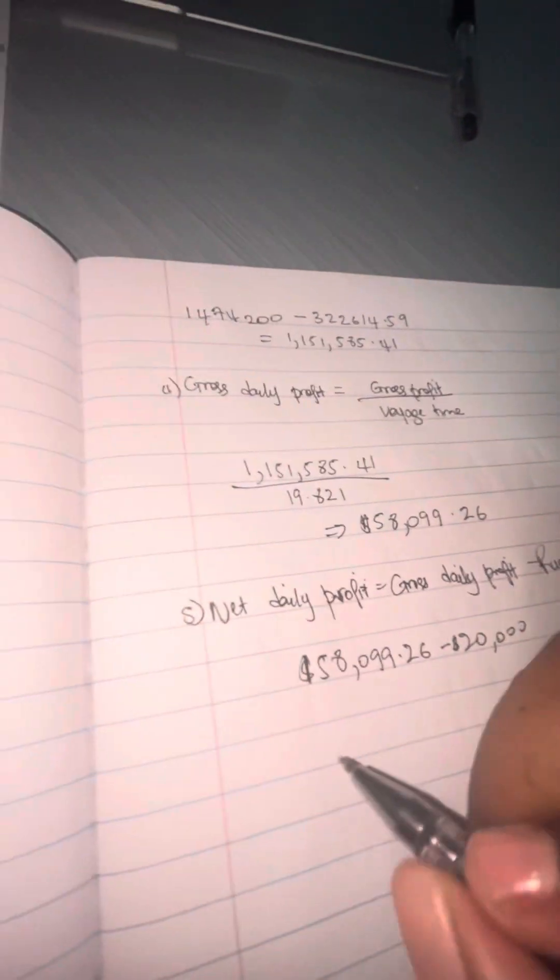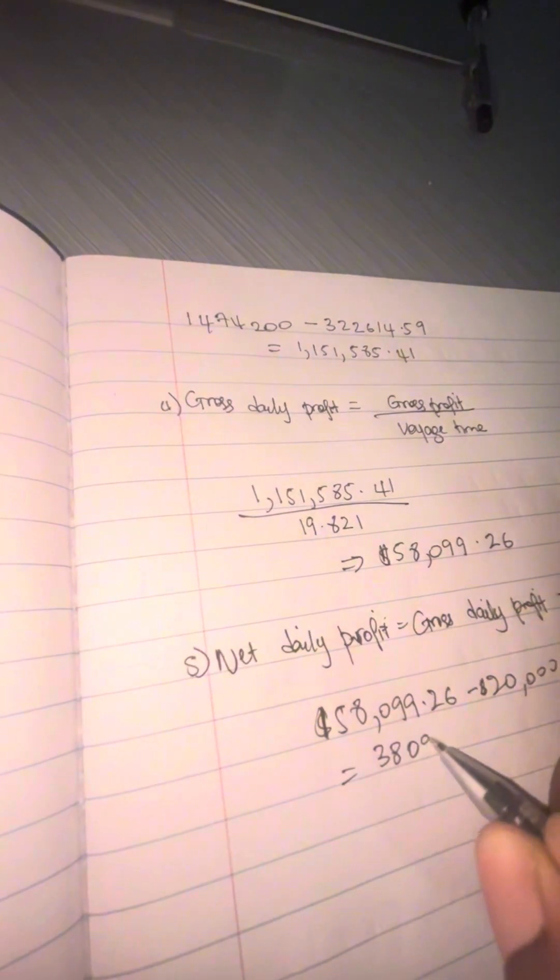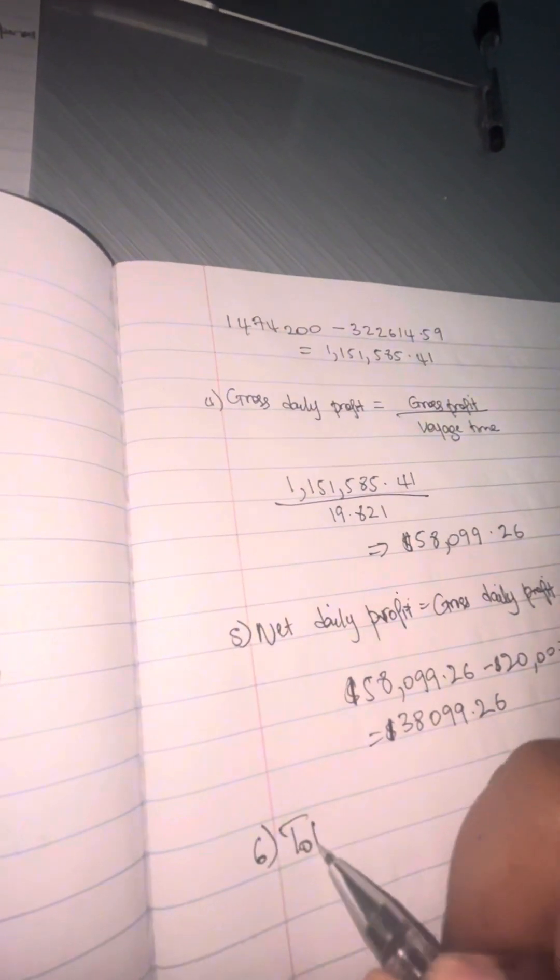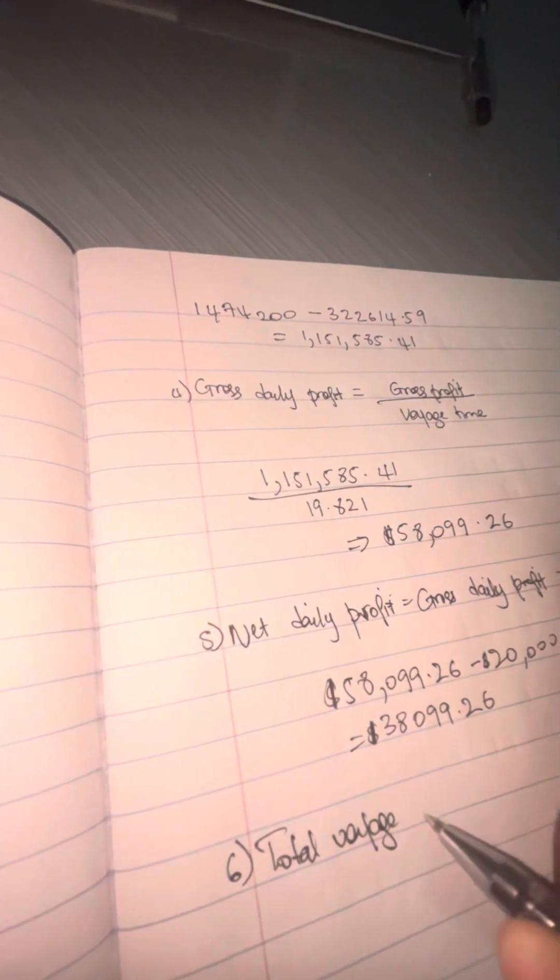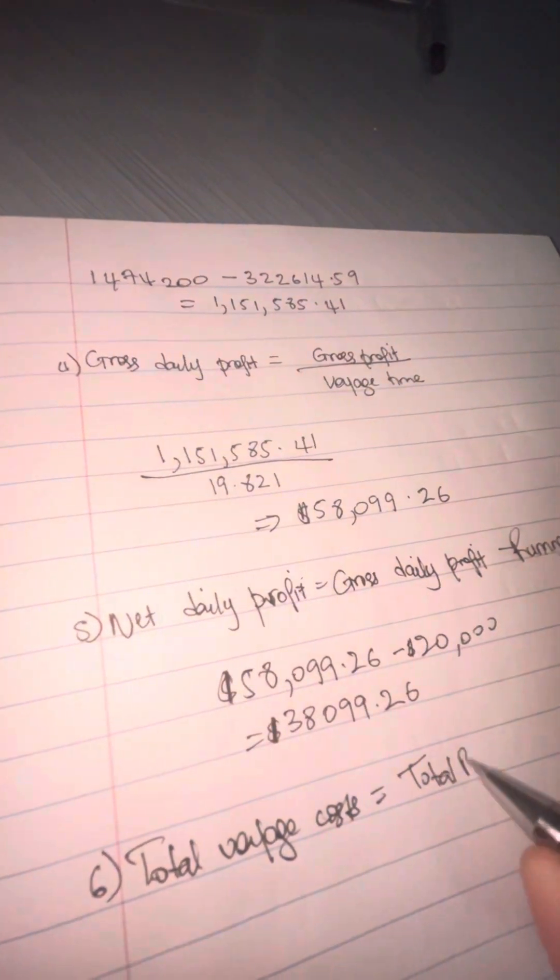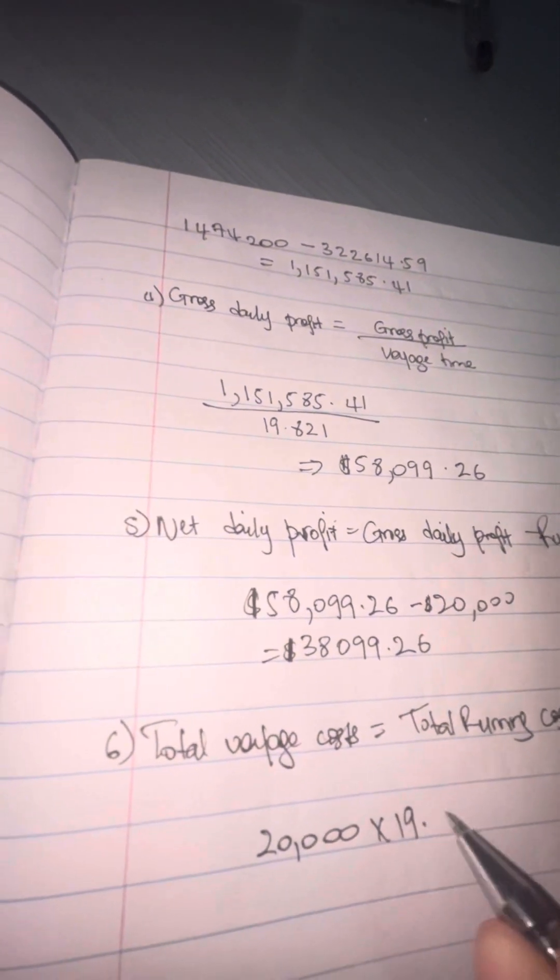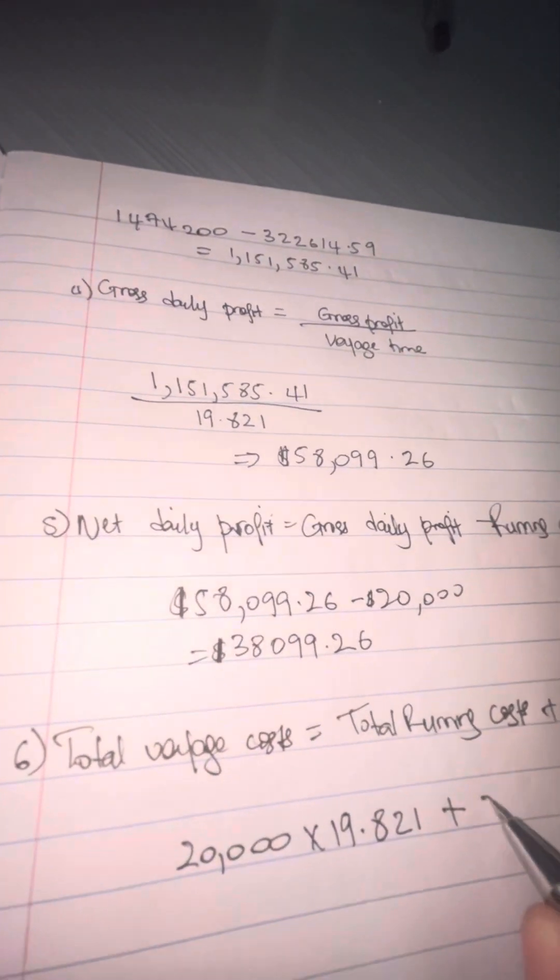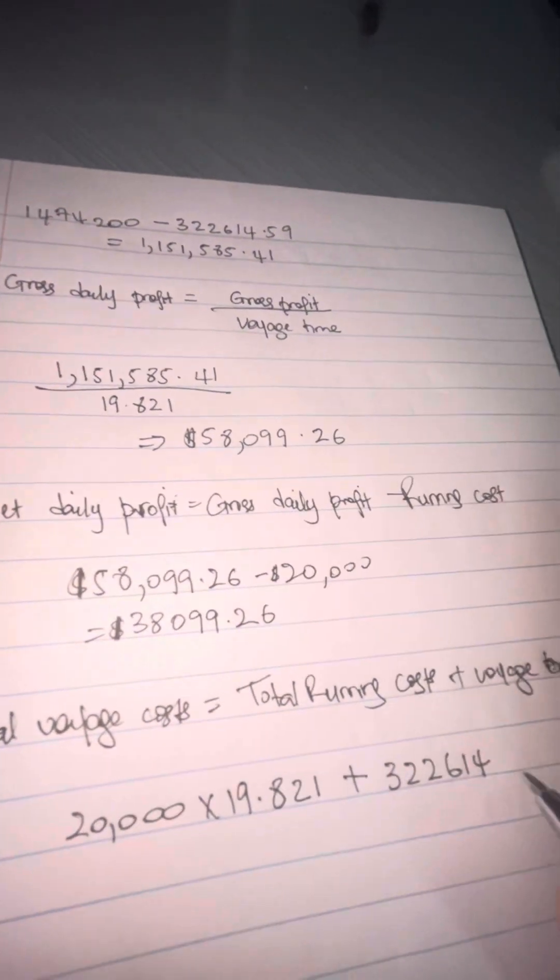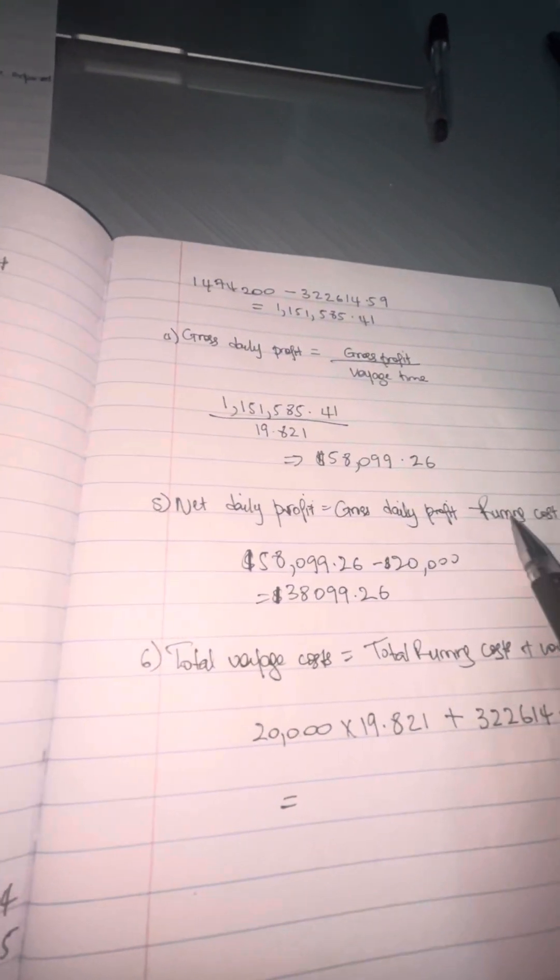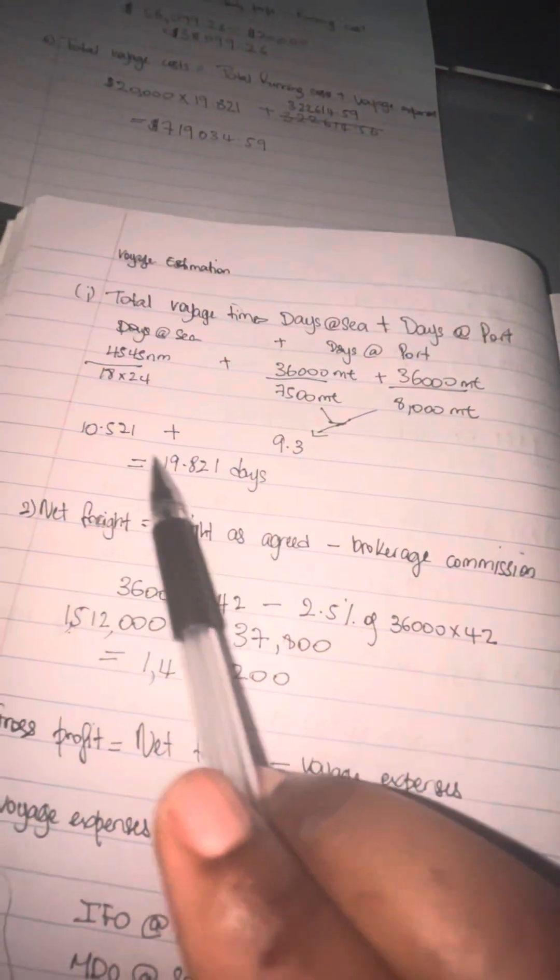Now we're moving on to total voyage cost, which is total running cost plus voyage expenses. Your total running cost is 20,000 dollars times your total voyage time, which is 19.821. Then add that to your voyage expenses, which was 332,000 something.